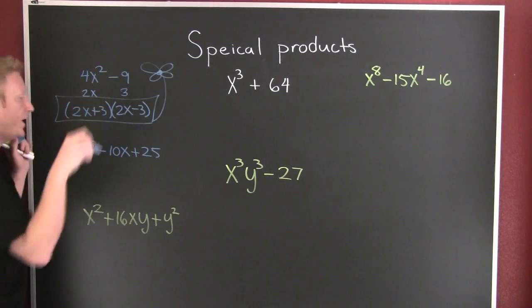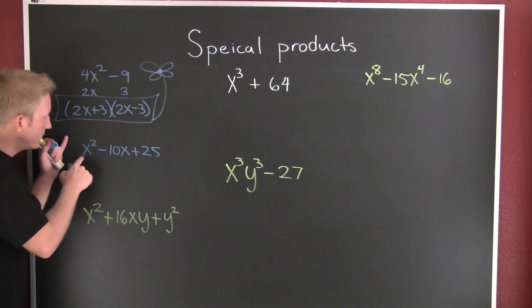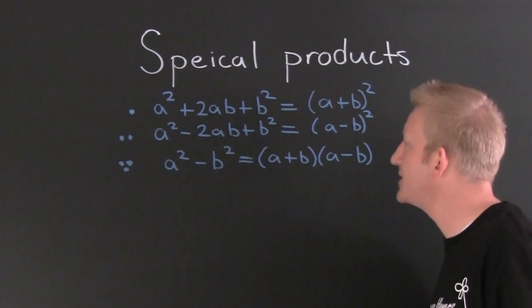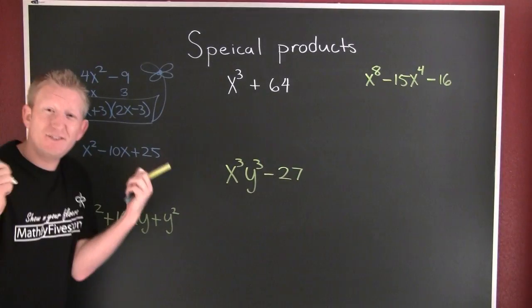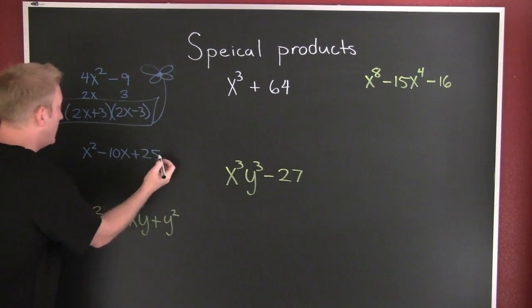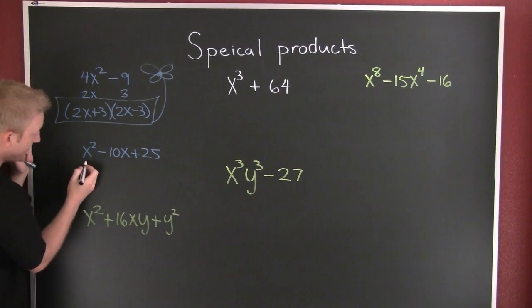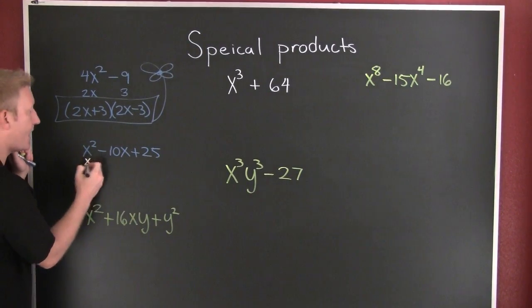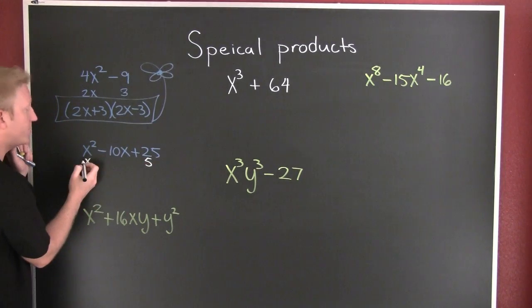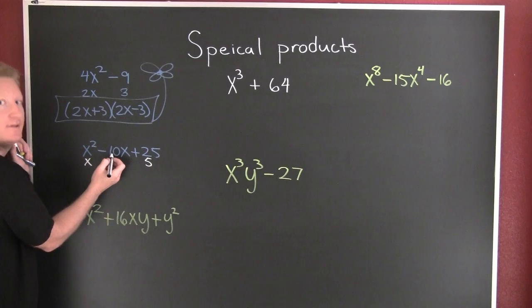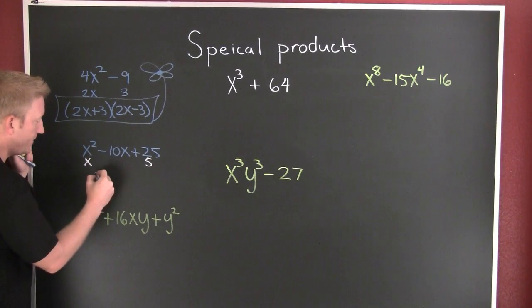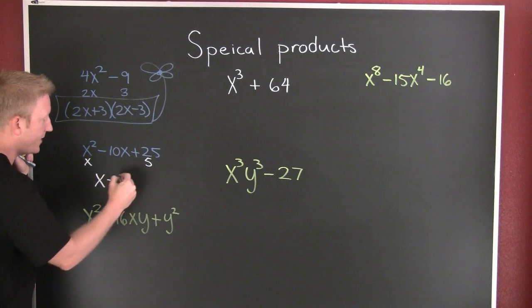But wait, there's more. Which one is this? It's a perfect square. Is this the square of something? Yes — x. Is this the square of something? Yes — 5. This one times that one, doubled — is it minus 10? Yes. So every single time it's (x − 5) squared.